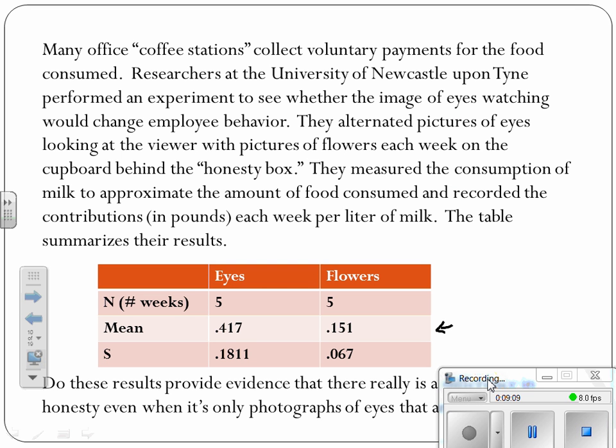So really what they're taking a look at is are people more honest if there's this perception of people watching them. So what they've done, this is kind of a weird statistic they come up with. They've somehow come up with this number that incorporates how much consumption there was as compared to the contributions per liter of milk. So it's kind of a weird looking thing. But one thing we can tell, it looks like typically eyes a little bit bigger than flowers. There's more, there's typically a higher value of contributions. However, one other thing to look at if you look at it's spread. The one with eyes is also more spread out. So even though it looks like it's higher, it might not be all that significant because it's much more variable. There's much more variation in eyes.